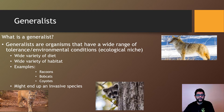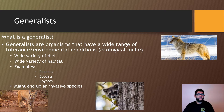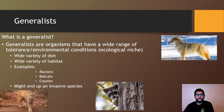Raccoons, for example, are pretty much known to eat anything they can get their hands on. Coyotes can have a general habitat range, and same thing with bobcats. So that allows them to survive in different areas, and occasionally they may end up becoming invasive species — coming into areas they're not really supposed to be and out-competing other species.